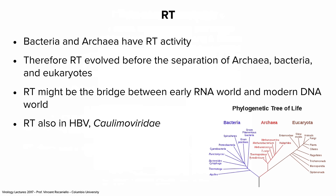It turns out that bacteria and archaea have reverse transcriptase activity — so eukaryotes didn't invent it. Here is the tree of life: we have bacteria, eukaryotes (you and me), and archaea, which is an independent line on the phylogenetic tree. Bacteria, archaea, and eukaryotes all have RT. The assumption is it must have been in a common precursor to all three cells, so RT evolved before the separation of archaea, bacteria, and eukaryotes.